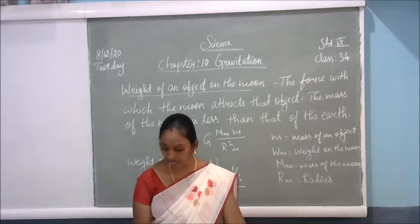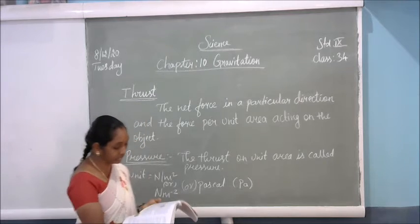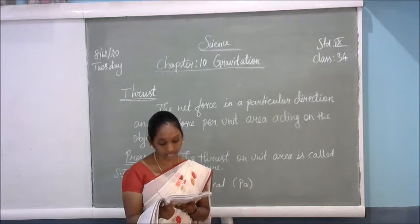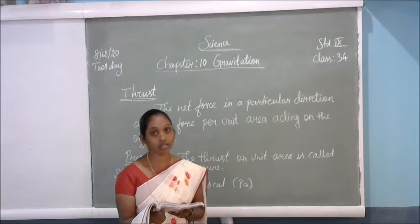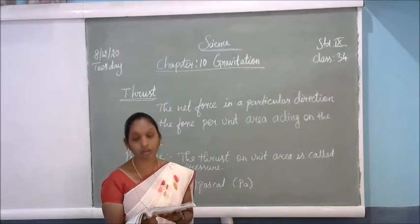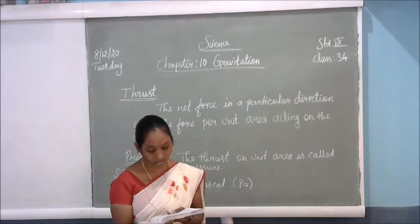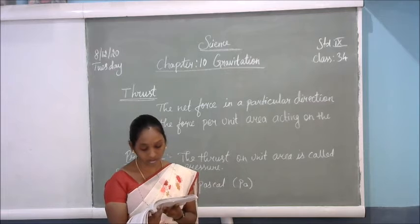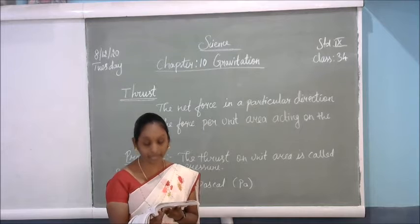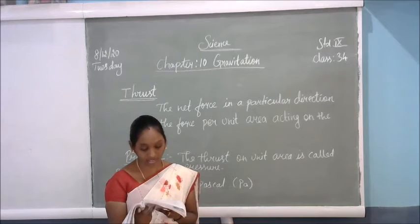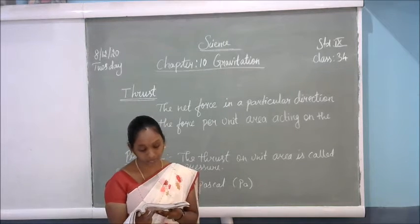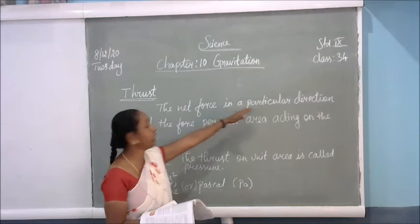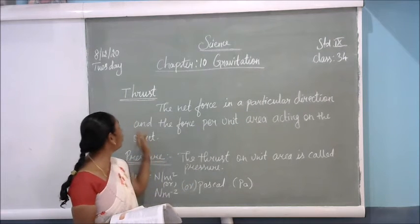The next topic is thrust and pressure. Please take out your textbook, page 138. Have you ever wondered why a camel can run in a desert easily? Why an army tank weighing more than a thousand tonnes rests upon a continuous chain? Why a truck or motor bus has much wider tires? Why cutting tools have sharp edges? In order to address these questions, it helps to introduce the concept of net force in a particular direction — the force per unit area acting on an object — that is called thrust.